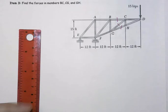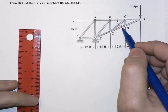In item 3, we're asked to find the forces in three different members of the truss, BC, CG, and GH, as marked here.